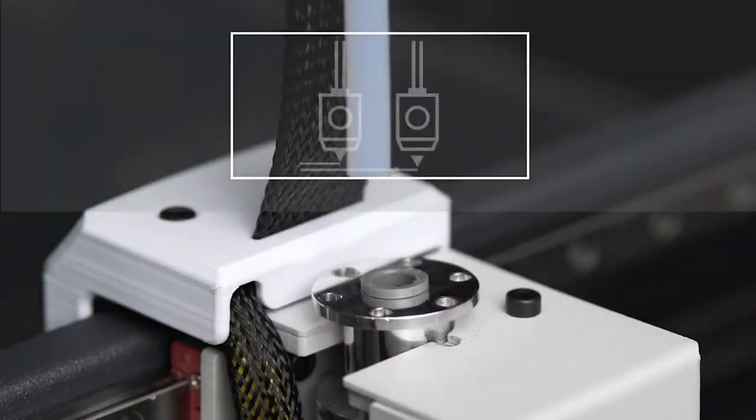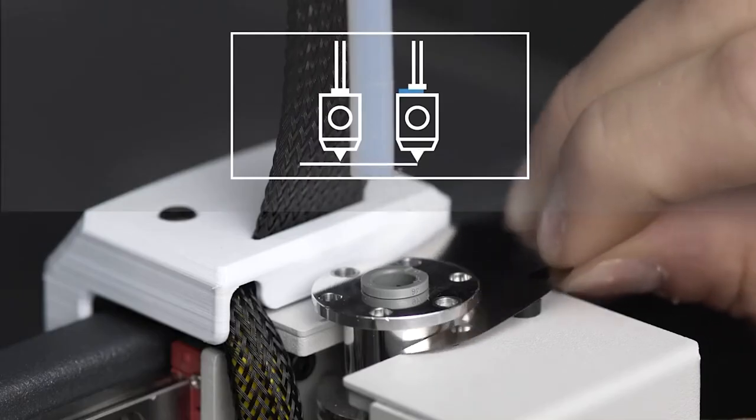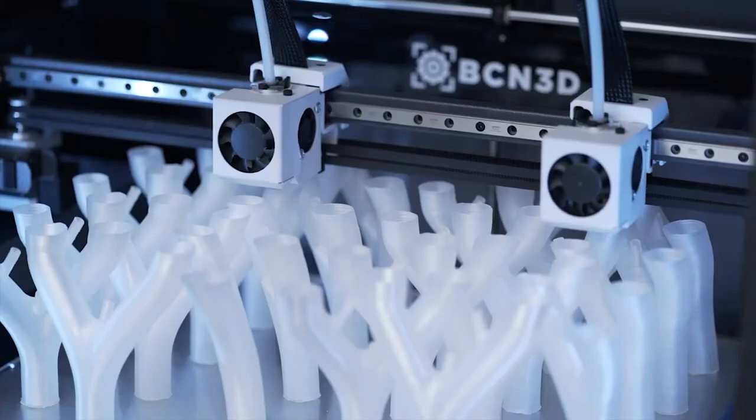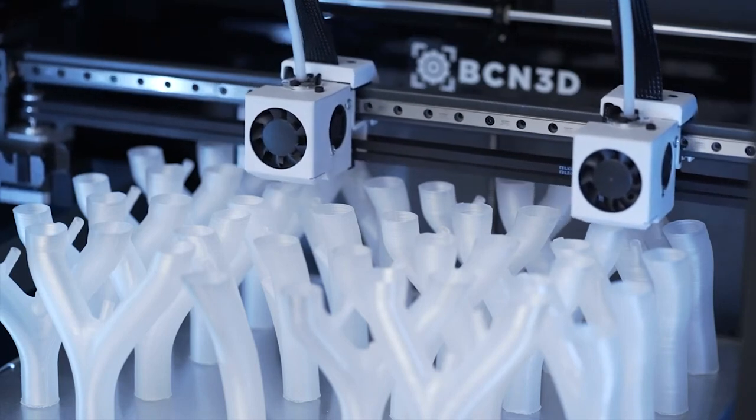Use shims to mechanically correct the height difference between the two hot ends, allowing you to accurately print in both duplication and mirror mode, exclusive functions of our IDEX technology.